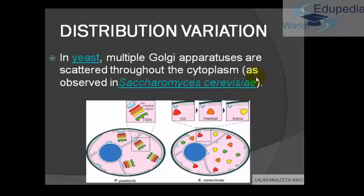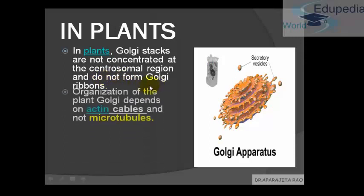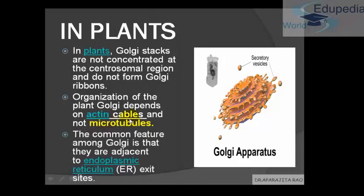Regarding distribution variation: in yeast — specifically Saccharomyces cerevisiae — the Golgi apparatus is scattered throughout the cytoplasm. In plants, what is the difference from the animal Golgi apparatus? In plants, the Golgi stacks are not concentrated in the centrosomal region, and plant Golgi apparatus do not form Golgi ribbons. Also, while in animal cells the stacks are held together by microtubules, in plants they are held together by actin cables. However, there is one common feature in both plant and animal Golgi apparatus: the Golgi apparatus is adjacent to the endoplasmic reticulum.